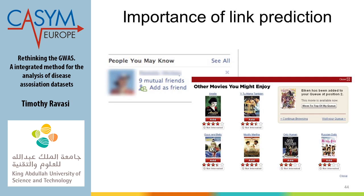Another example outside biology: Netflix. When you download a movie and it says 'you may also like this,' it uses common neighbors: it sees what other movies you downloaded and which other movies people who downloaded the same movie also watched, and says maybe you have the same taste. So the link prediction problem is relevant for medical purposes but also for applied things like social networks.